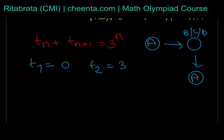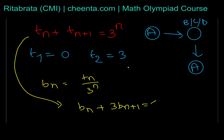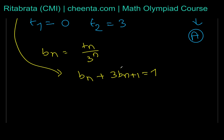To solve the recurrence t_n plus t_{n+1} equals 3^n with base values, we use a variable substitution. Define b_n equals t_n divided by 3^n. Dividing the recurrence equation by 3^n gives us b_n plus 3·b_{n+1} equals 1.